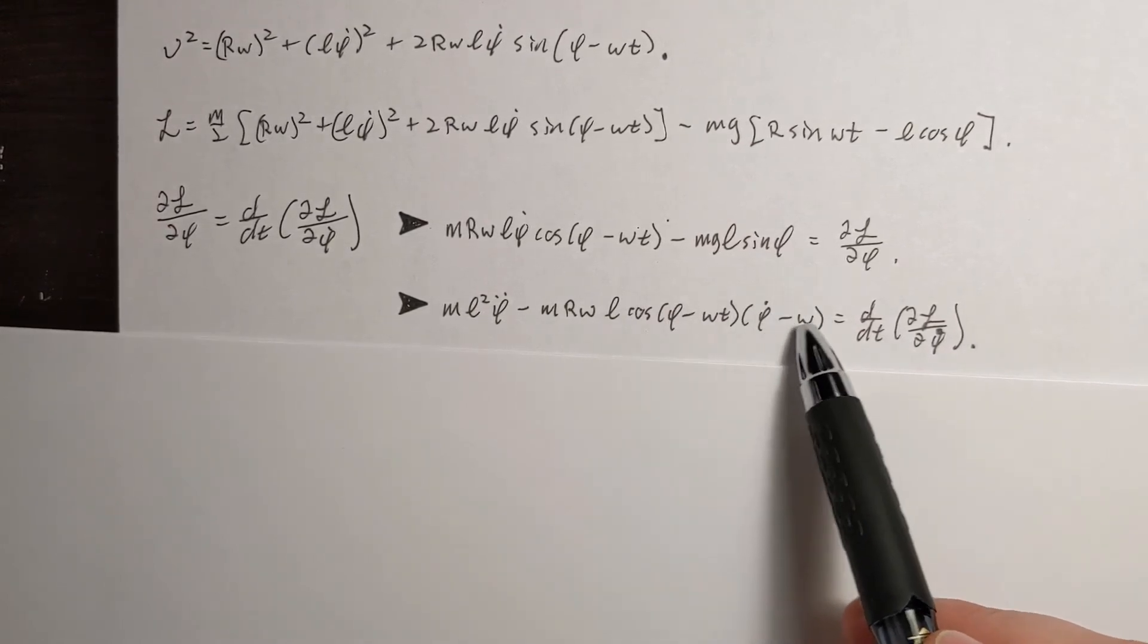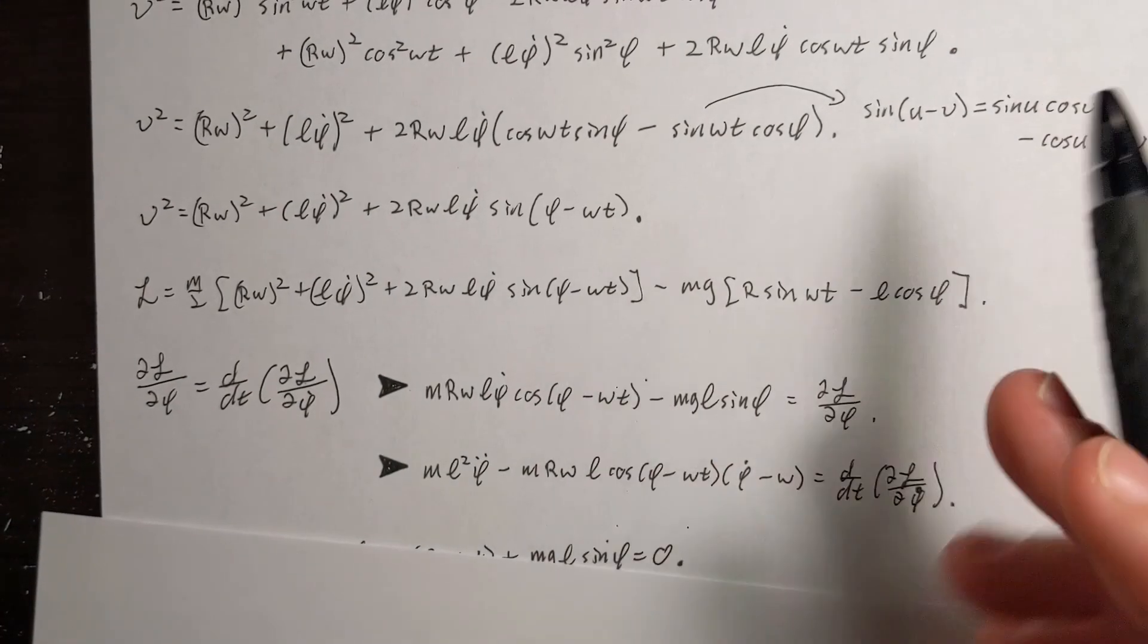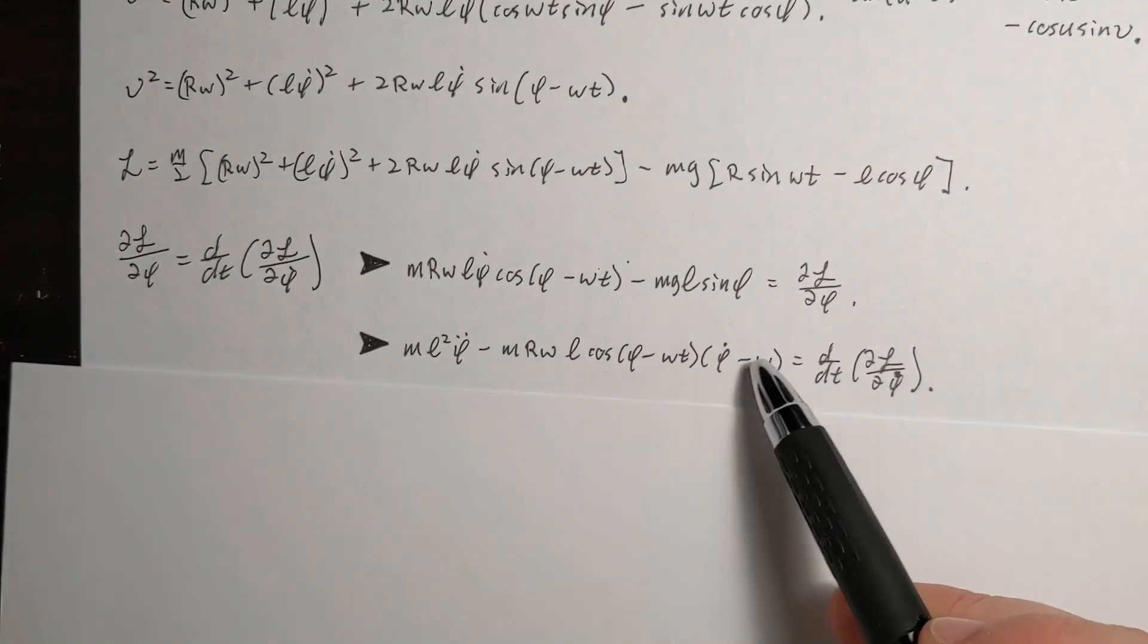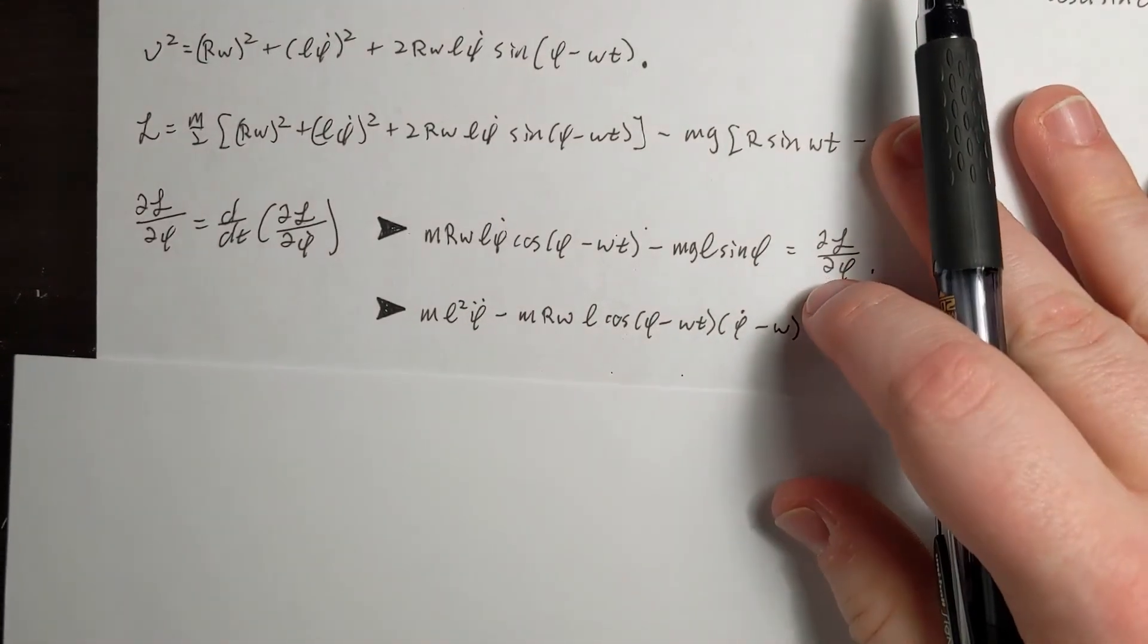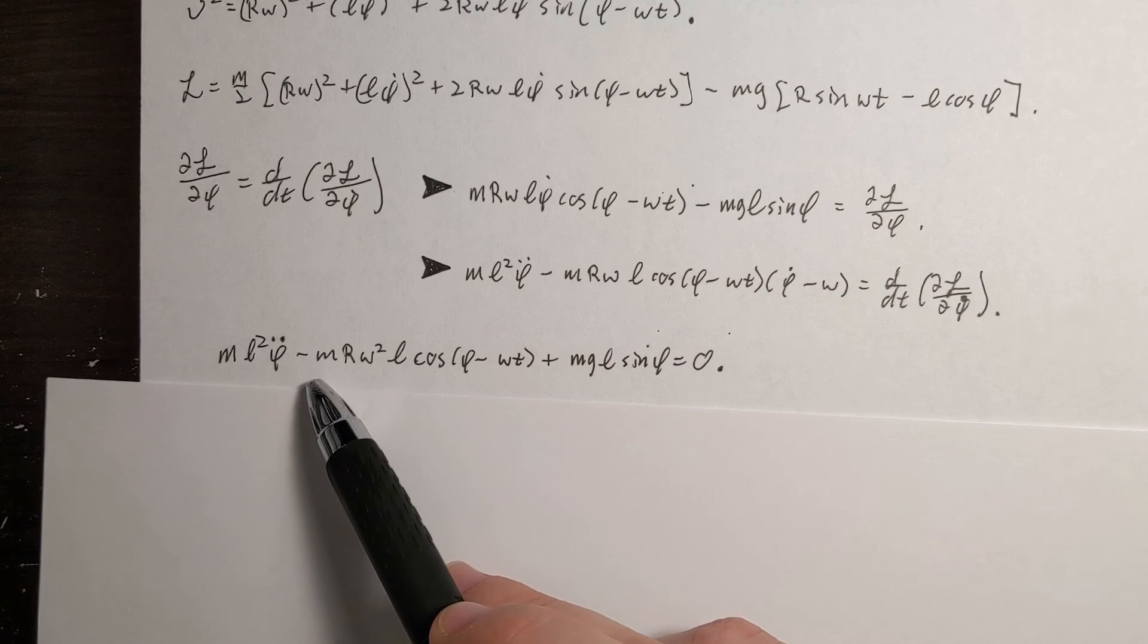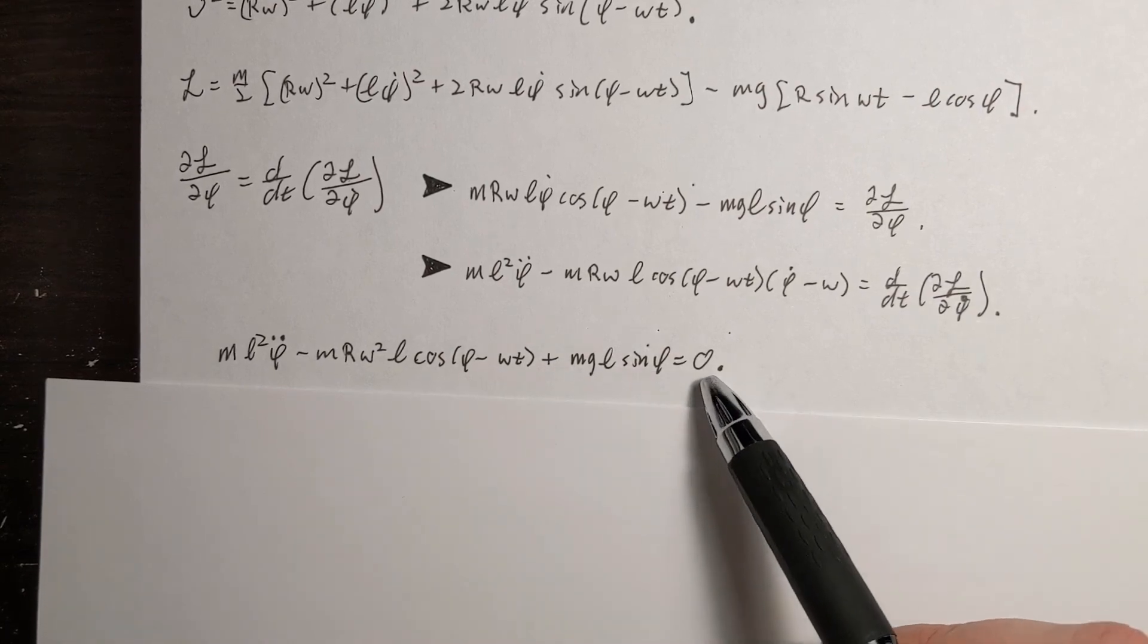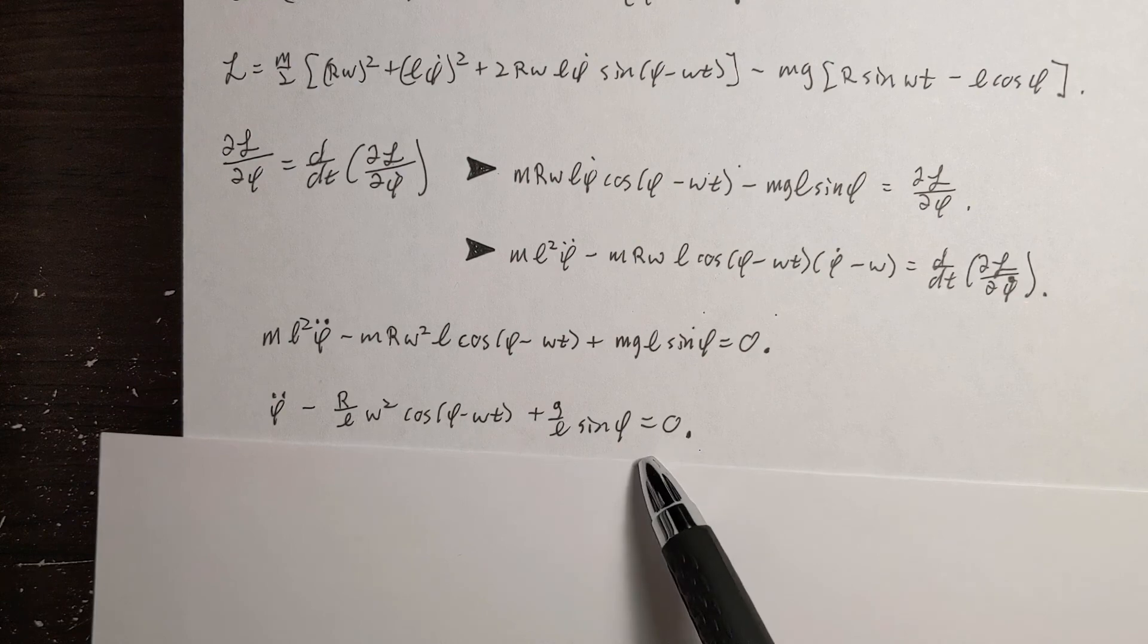This I've already done is already the time derivative of the Lagrangian with respect to phi dot. And we're going to have the derivative here came from taking the derivative of sine phi minus omega t, taking that derivative with respect to time. We're left with essentially two cosine terms. But I'm grouping it together for simplicity. But we can see we can cancel this phi dot term with this phi dot term. So those will cancel. And bringing down, we get pretty close to what will be the final equation of motion. So ML squared phi double dot minus MR omega squared L cosine phi minus omega t plus MgL sine phi. And dividing by ML squared, we're left with this term here.